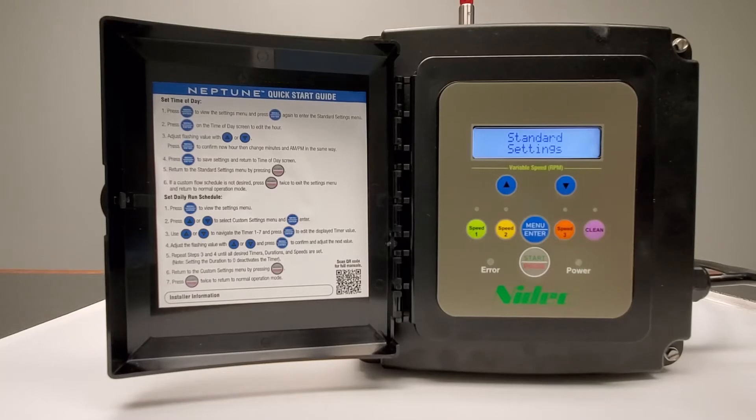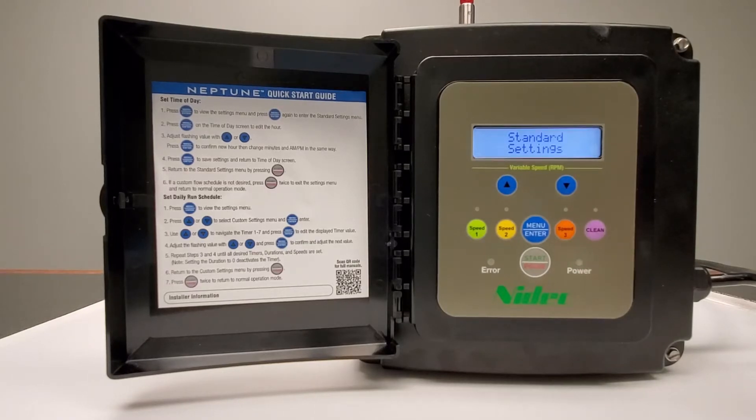After consulting the user manual and setting the correct voltage connection to your Neptune motor, power it on for the first time. The display on the control will go to the standard setting menu.